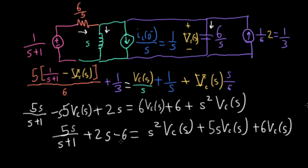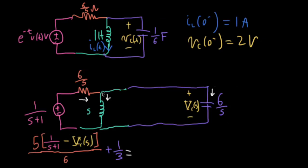I want to redo this problem using the series versions of the equivalent circuits instead of the parallel versions — basically as a check on myself, since I don't have a solution manual for this book. If I get the same answer using both techniques, it's not a guarantee I've done it right, but it's pretty good evidence. If I got two different answers, I'd know at least one of them was wrong.